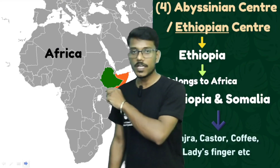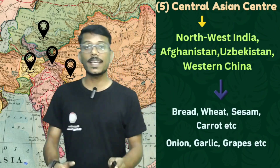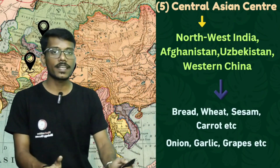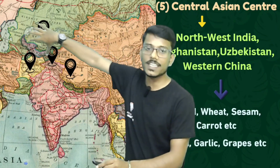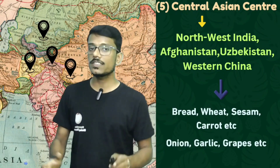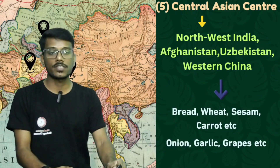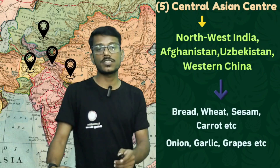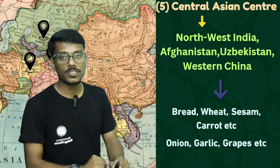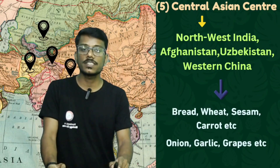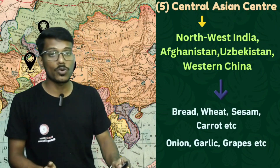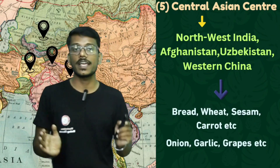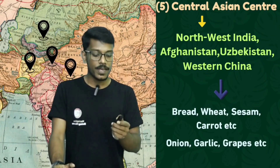The fifth region is the Central Asian center of origin. This includes north-west India, Afghanistan, Uzbekistan, and western China. From this Central Asian region, bread wheat, carrot, onion, garlic, and grapes originated.